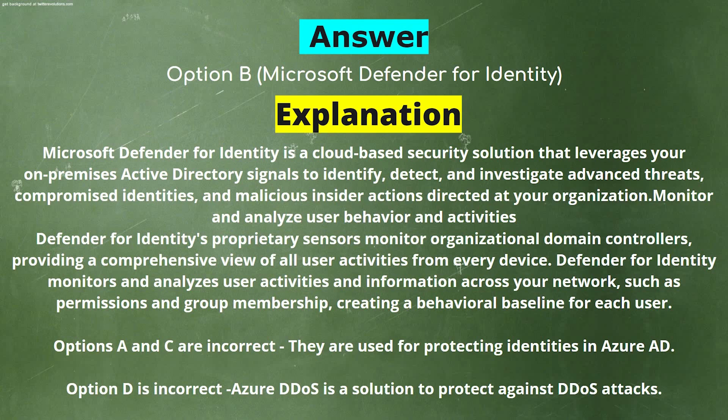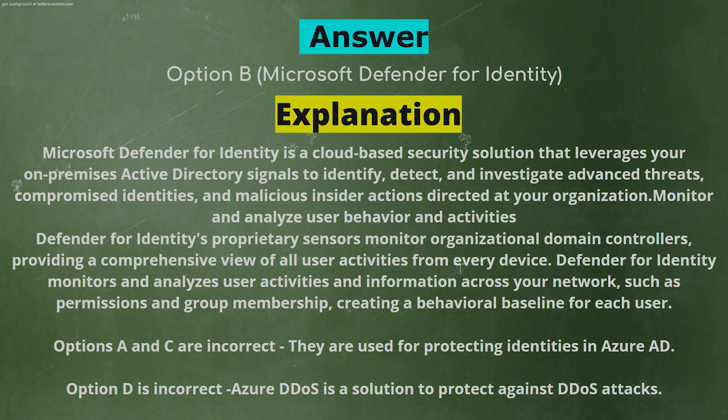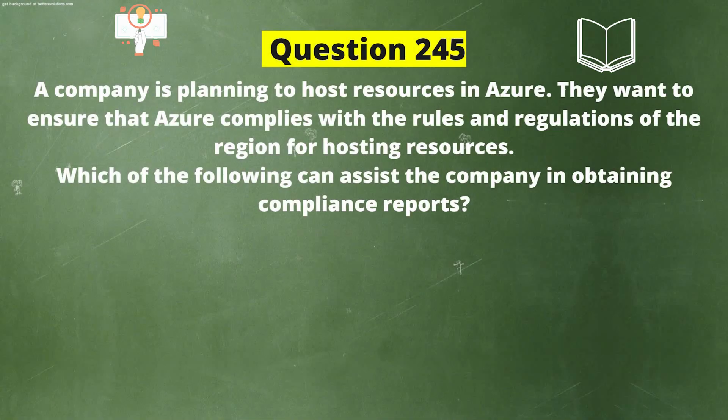Options A and C are incorrect — they are used for protecting identities in Azure AD. Option D is incorrect: Azure DDoS is a solution to protect against DDoS attacks.